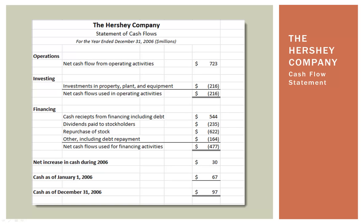So let's take a look at a basic cash flow statement. This is from the Hershey Company, from a textbook I use in my work — the statement of cash flows ending December 31st, 2006. The first thing to notice is that everything is broken down into the three fundamental business activities: operations, investing, and financing. Operations is the day-to-day things the business does — it sells product, it manufactures product, and things like that.